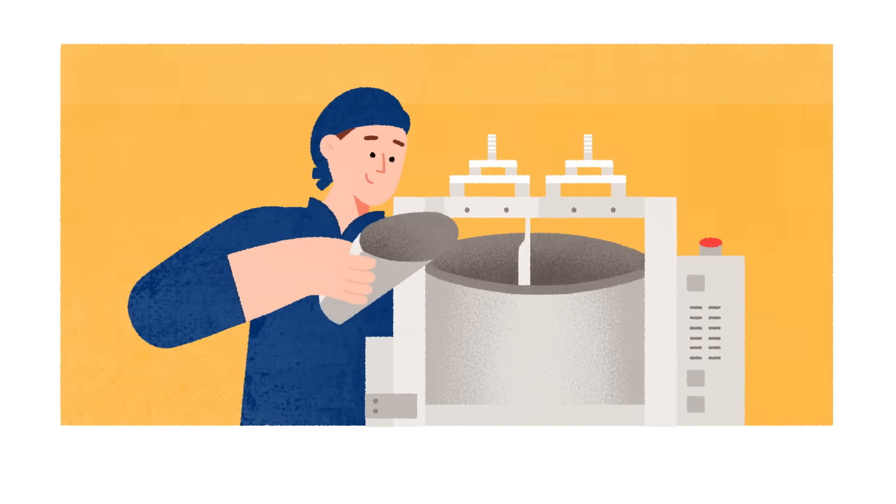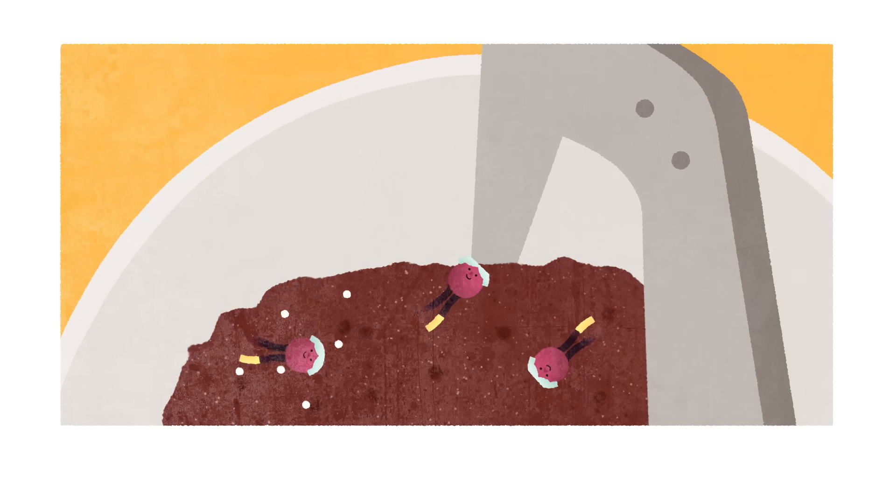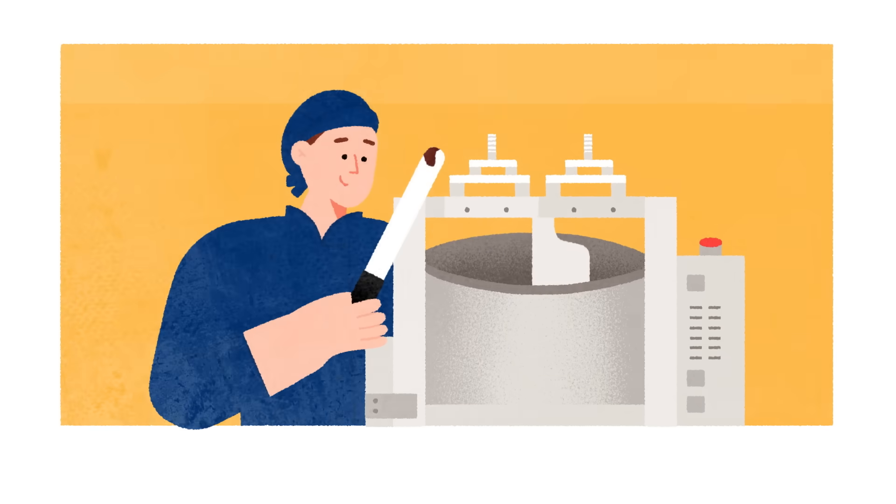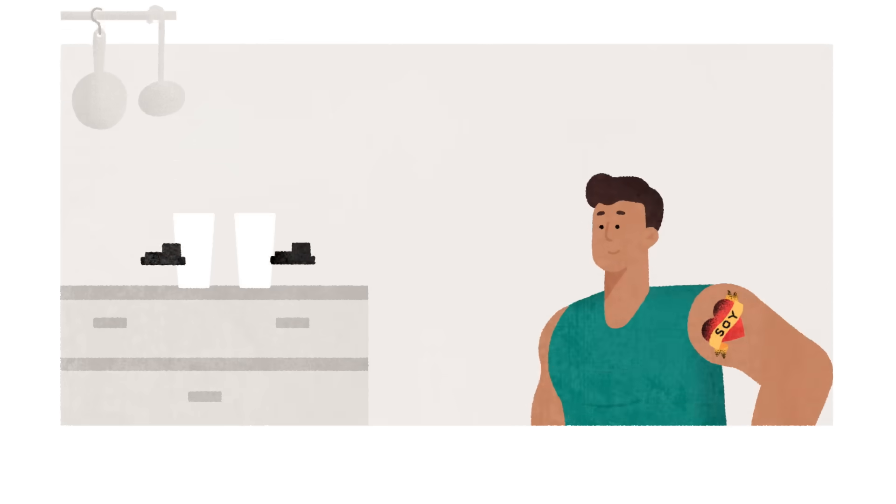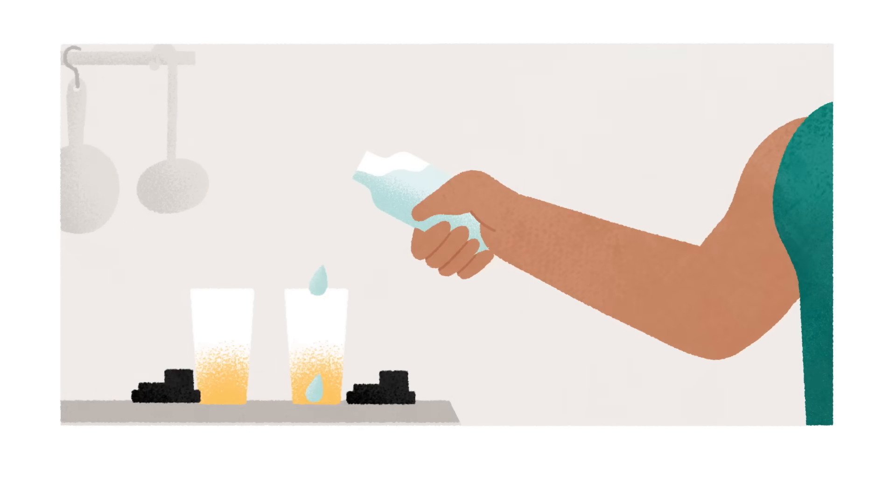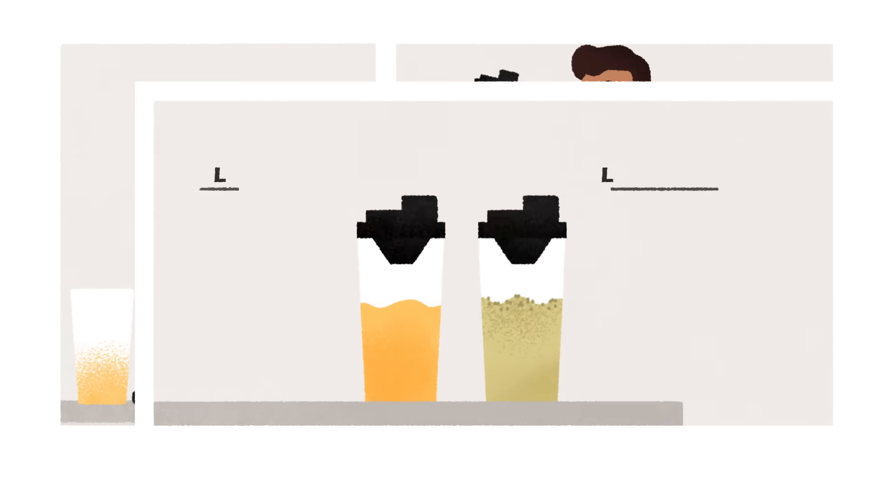For example, during chocolate production, phospholipids attach to both the fatty components of the cocoa butter and the water-soluble sugar particles, making them easier to combine into a smooth mixture. A similar process happens in powdered products that need to be instantly rehydrated. Soy lecithin bonds with the water and helps the powder disperse more quickly.